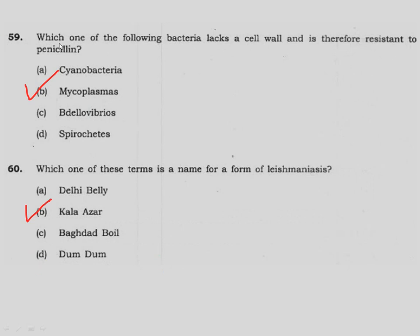Question 59: Which one of the following bacteria lacks a cell wall and is therefore resistant to penicillin? Penicillin is an antibiotic that inhibits cell wall synthesis. So the bacterium that lacks a cell wall and is penicillin resistant is mycoplasma, option B.